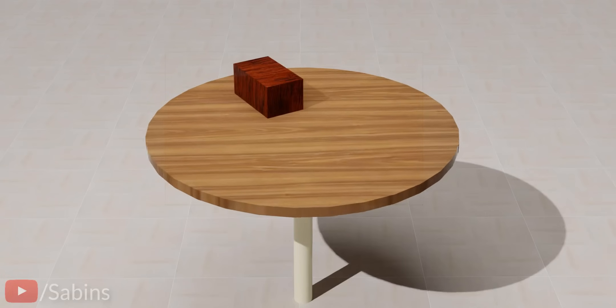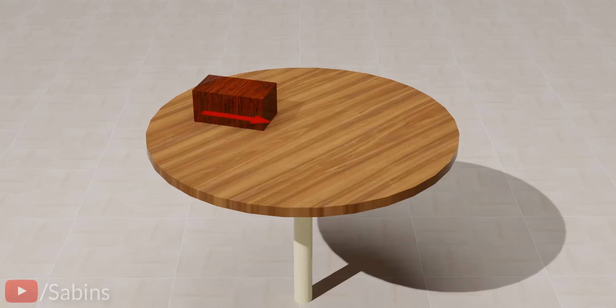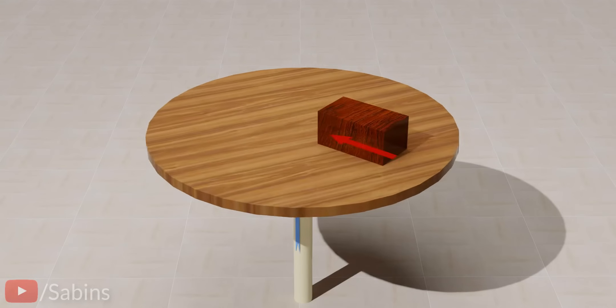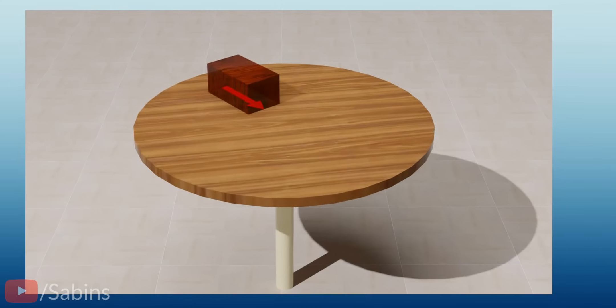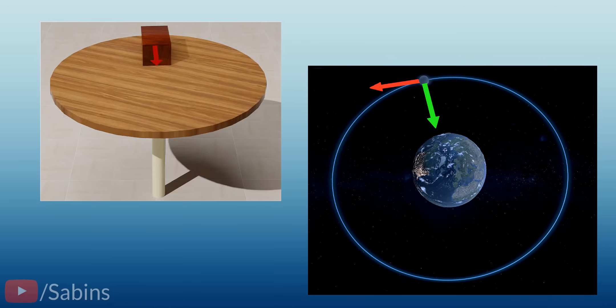Consider this spinning wooden block. The frictional force between the block and floor lends the necessary centripetal force. In short, centripetal force should be supplied by some external source such as gravitation, tension, friction, etc.